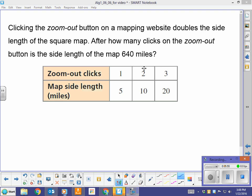And then we have this kind of modeling situation here. It says, clicking the zoom out button on a mapping website doubles the side length of the square map. After how many clicks on the zoom out button is the side length of the map 640 miles? So I see with one click, I have a side length of 5. With two clicks, it's 10. Three is 20 because we're doubling. So I've got this common ratio here of 2. So I want to know when is it 640? So my function is going to be a sub 1, which is 5, times my common ratio of 2 to the power of n minus 1.